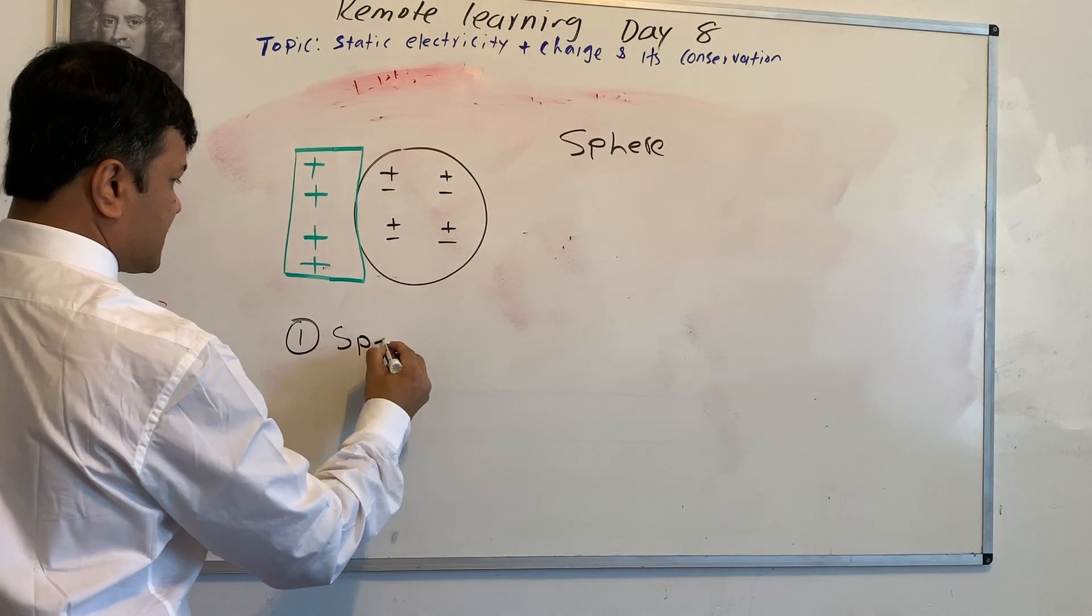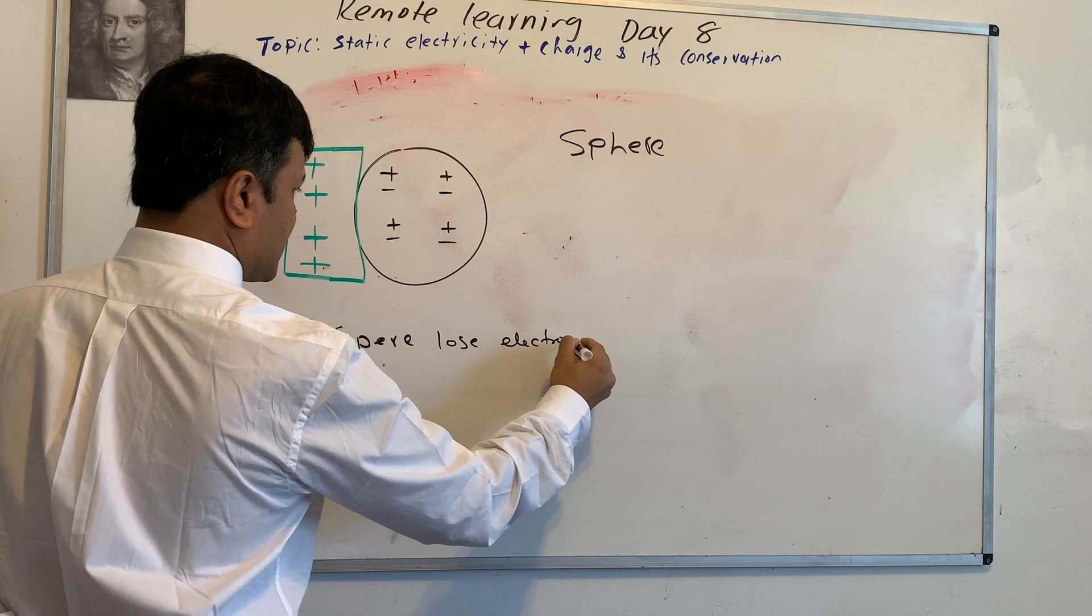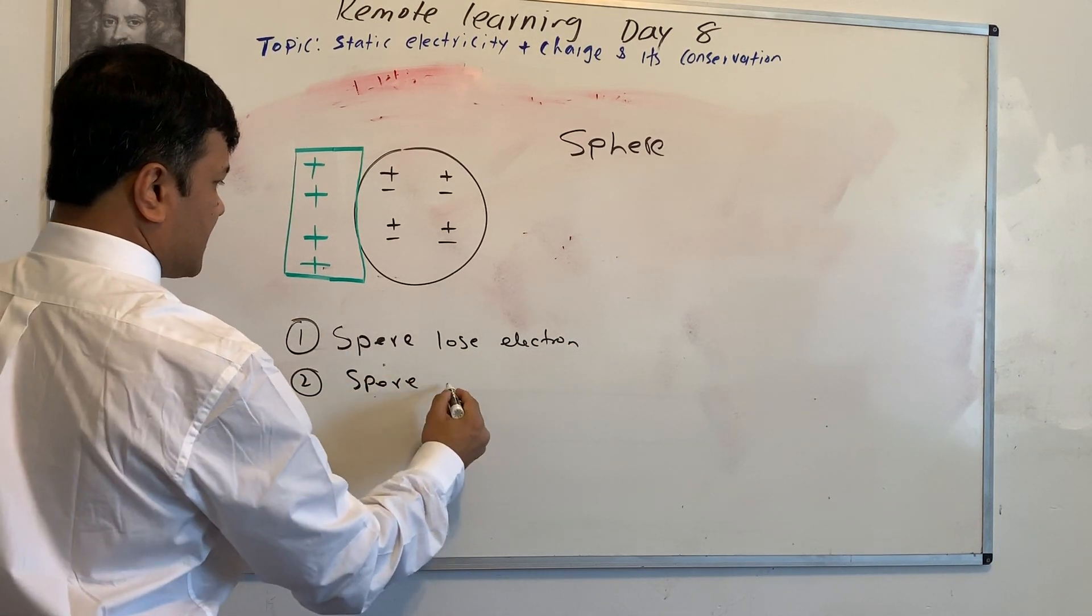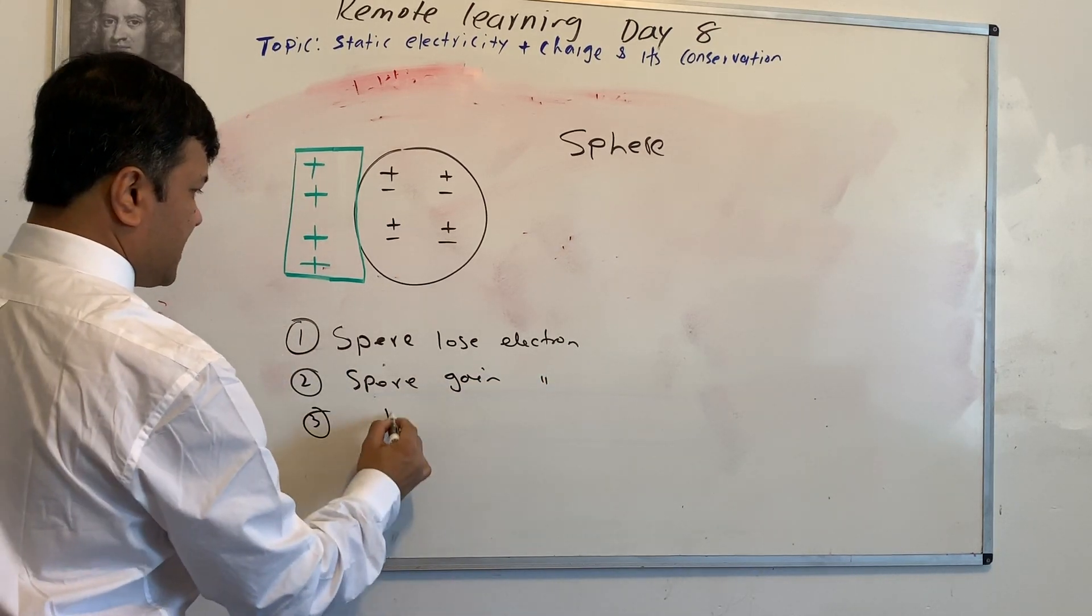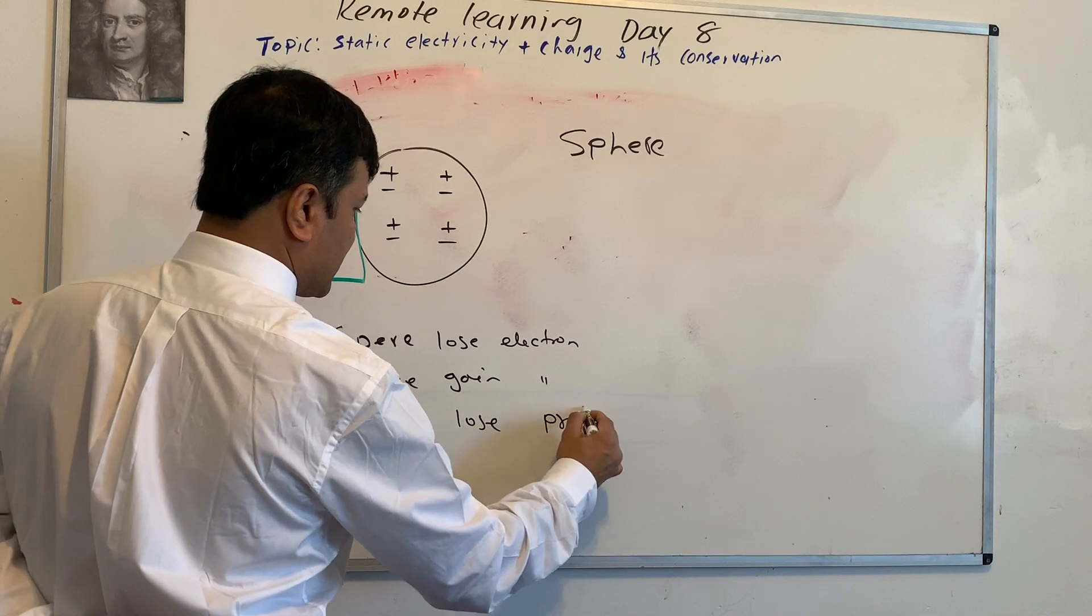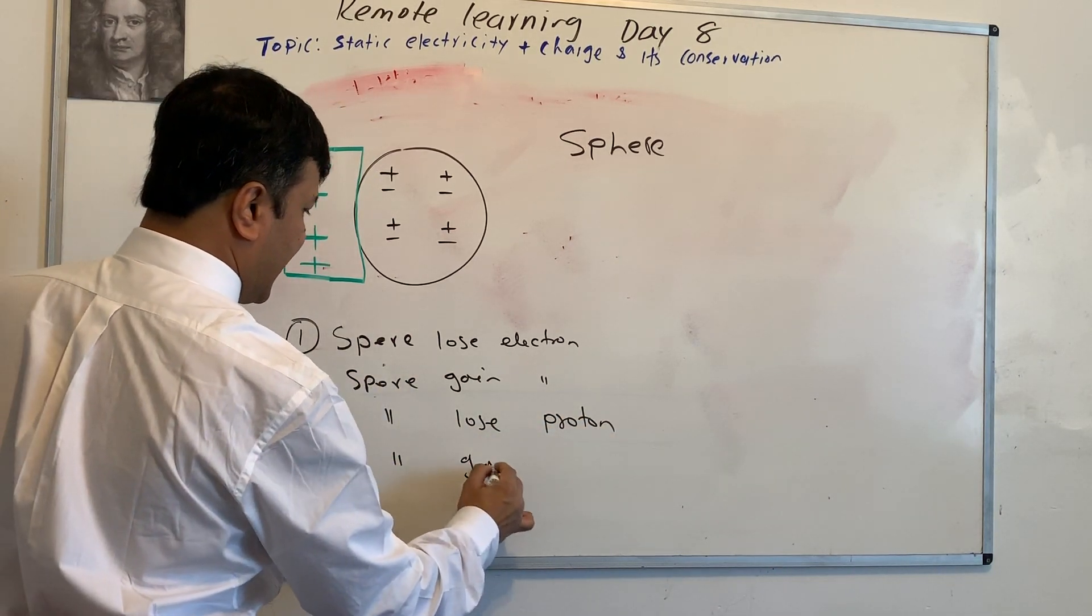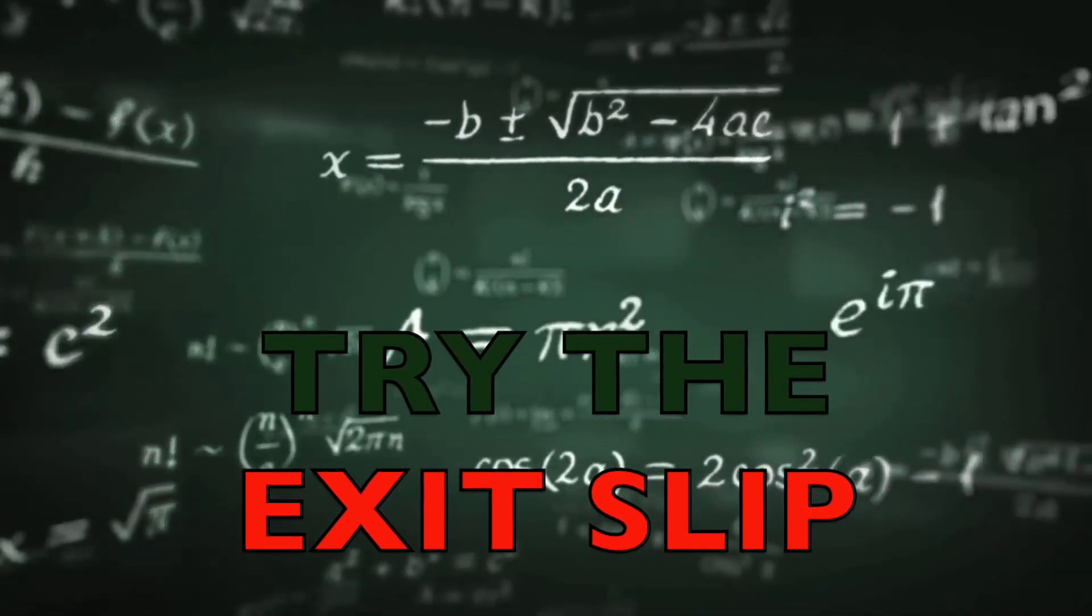Number one, the sphere loses electron. Number two, the sphere gains electron. Number three, the sphere loses proton. Number four, the sphere gains proton. Now, pause the video and try your own.